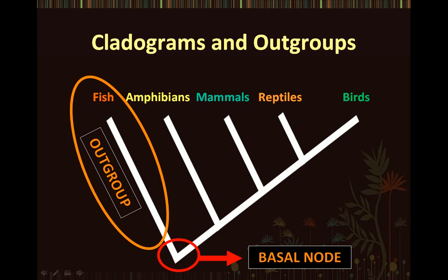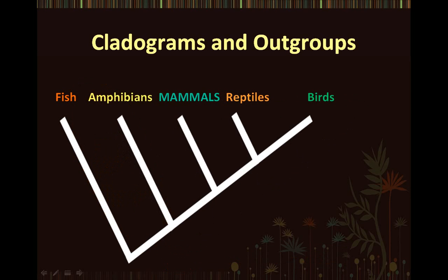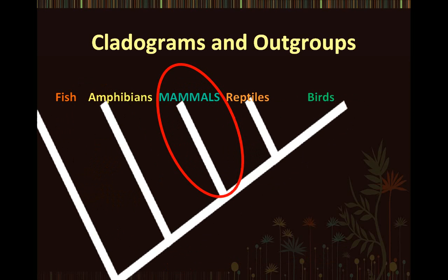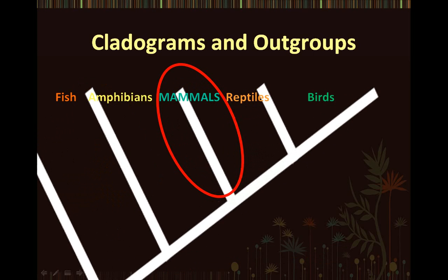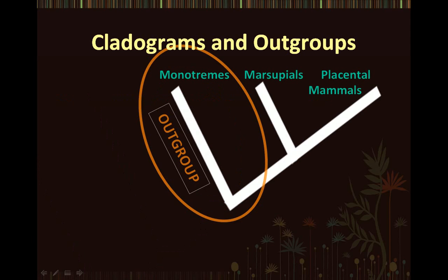Let's further elaborate on the previous cladogram and look at mammals in particular. If we zoom into mammals, we will see that mammals actually have three different branches: monotremes, marsupials, and placental mammals. In this cladogram, the out-group would be monotremes, because they diverged from the other two taxa before they diverged from each other.